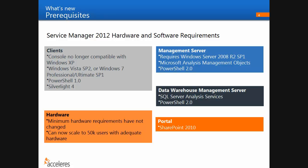We'll cover the software prerequisite changes that we think have the biggest implications for clients. Starting with the client: one of the biggest changes is that the Service Manager console is no longer supported on Windows XP. The console must be installed on Windows Vista Service Pack 2 or Windows 7 Professional or Ultimate Service Pack 1. This is probably the prerequisite change with the largest impact. Workarounds exist — for instance, you can use terminal services to provide the console to users whose client machines are running Windows XP, or upgrade a subset of analyst users to Windows 7.